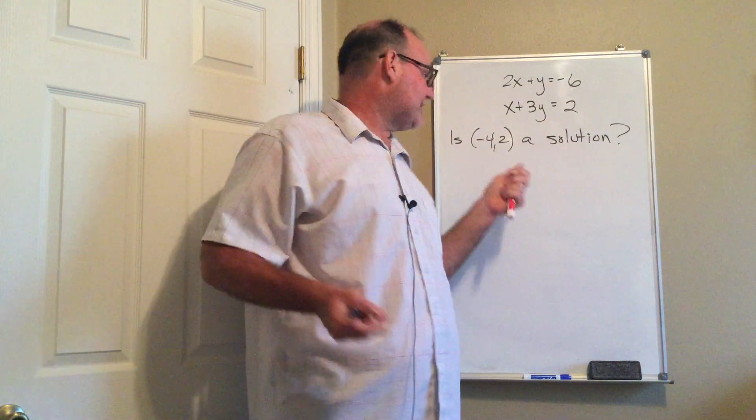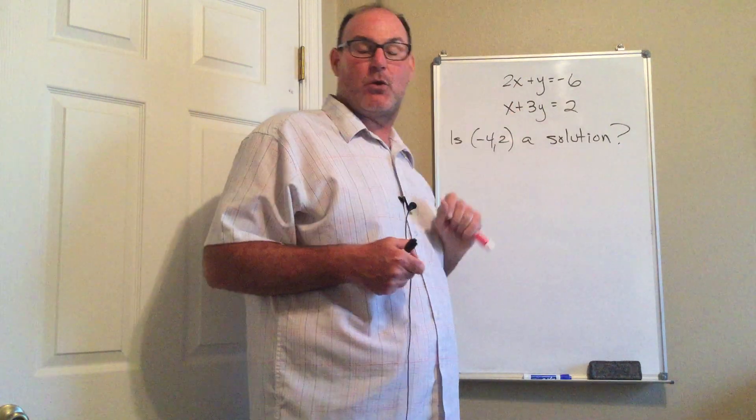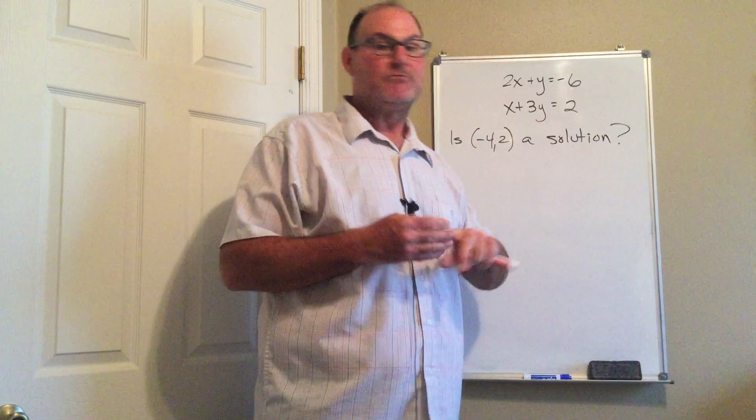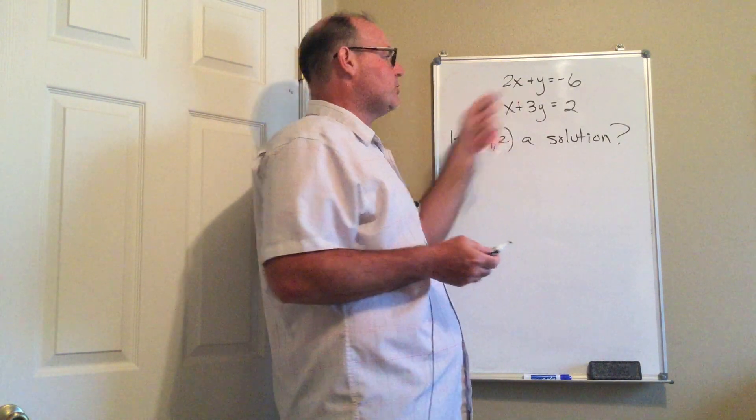Now the key to this is that the ordered pair, for it to be a solution, has to satisfy both equations. If it does not satisfy either of them, you do not have a solution. So let's give this a try. Is (-4, 2) a solution?